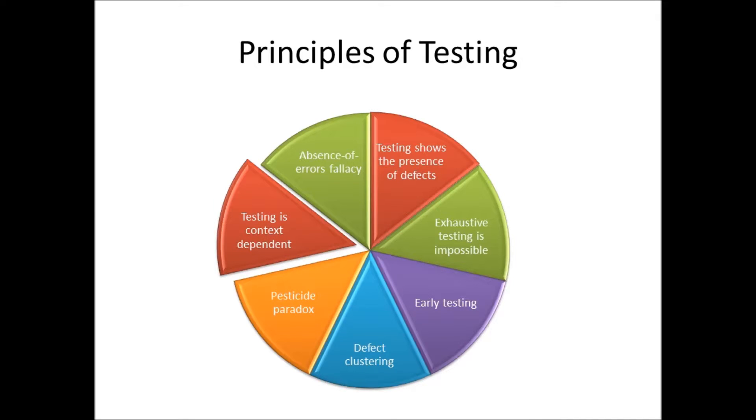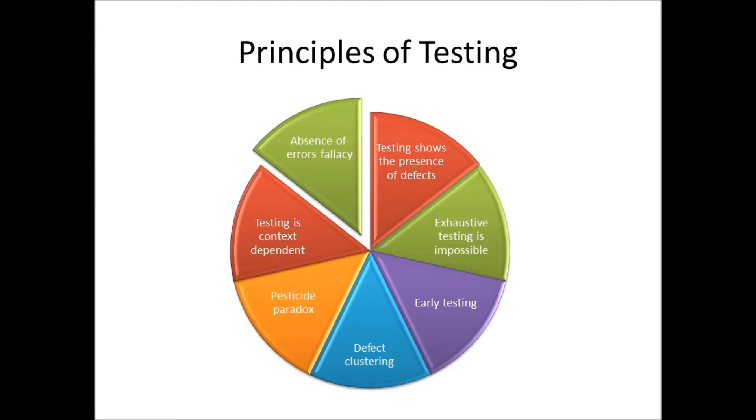The sixth principle is Testing is Context Dependent, which simply means that different kinds of sites are tested differently. The last principle is Absence of Errors Fallacy. If the program isn't helpful to the end user, all the testing and fixing of bugs won't help.